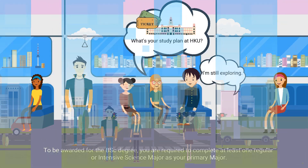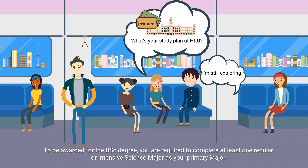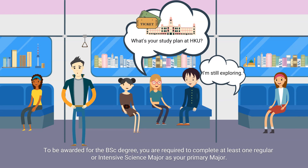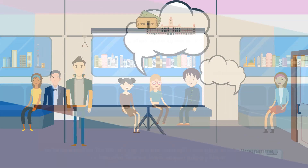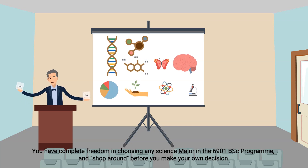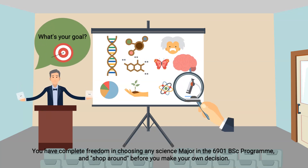To be awarded the BSc degree, you are required to complete at least one regular or intensive science major as your primary major. You have complete freedom in choosing any science major in the 6901 BSc program and shop around before you make your own decision.